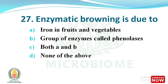Next question: enzymatic browning is due to which of the following? The options are iron in fruits and vegetables, a group of enzymes called phenolases, both A and B, none of the above. The right answer is option B, a group of enzymes called phenolases.